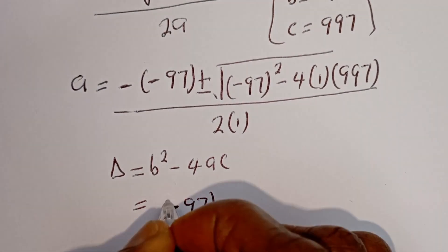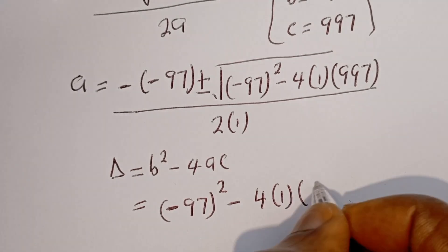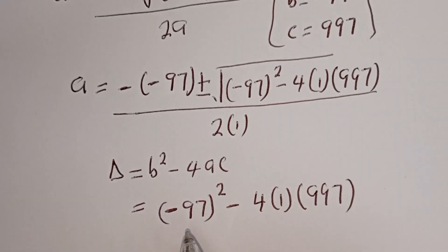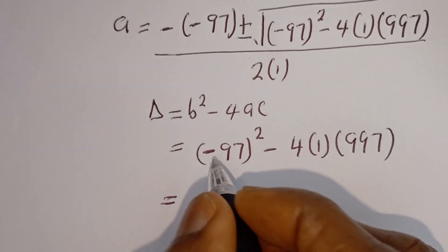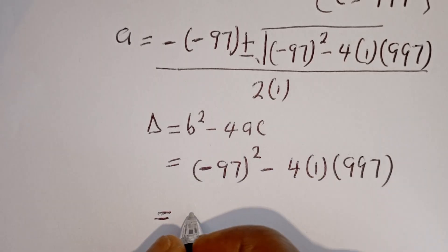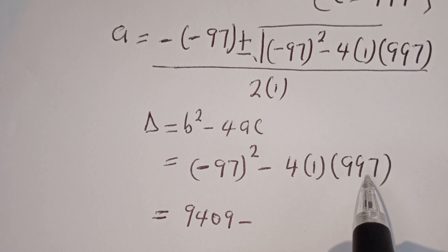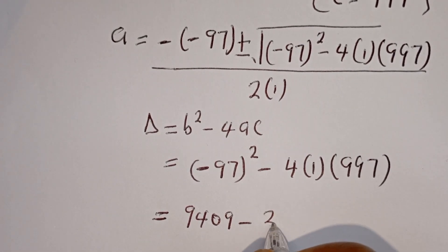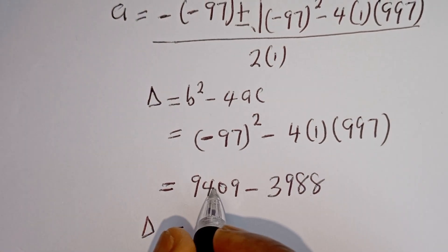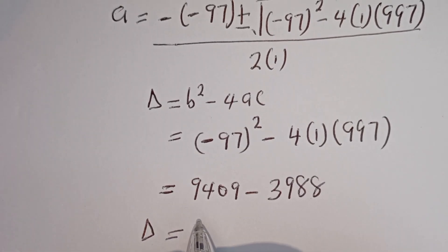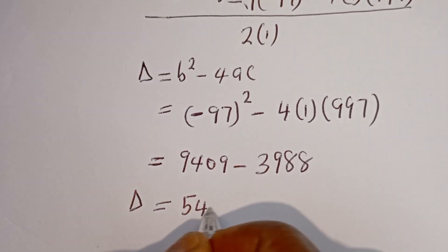The discriminant d equals b squared minus 4ac. That is: (minus 97) squared equals 9409, minus 4 times 1 times 997 equals 3988. So d equals 9409 minus 3988, which gives us 5421.